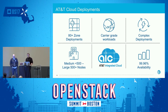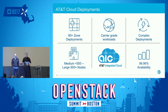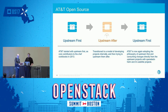A quick update about how AT&T will use this: we have 80-plus zone deployments, each including two OpenStack regions, so really talking about 160 OpenStack installations. We're targeting 100-plus zones, translating to 200-plus OpenStack production installations. Each of these installations is complex, running carrier-grade workloads spanning from small sites to very large sites. Our availability is fairly high and we intend to keep that even after the transition to OpenStack Helm.